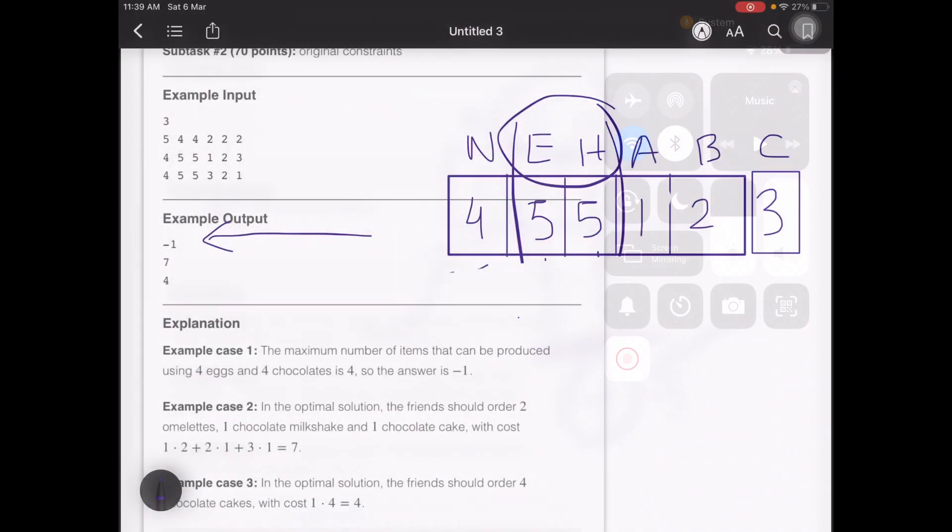Let us look at another example. For the next example we have 4 friends, n equals 4, and the amount of eggs and chocolate bars are 5 and 5. We'll have to first check whether it is possible to create at least 4 items, and we find that yes it is possible.